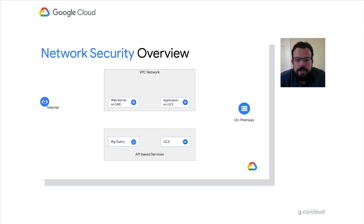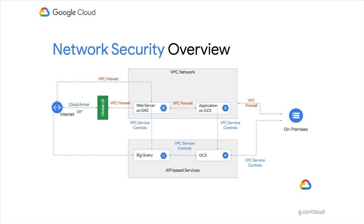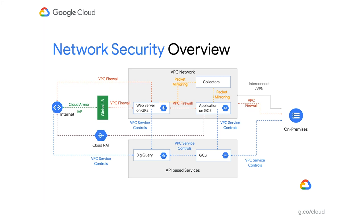On Google Cloud, we have several key network security controls. Starting from the outside in, we have Cloud Armor, the identity-aware proxy, and the global load balancers as our layer 7 controls at the edge of the network. Cloud Armor, in conjunction with the global LBs, protects applications from DDoS attacks. The identity-aware proxy is part of our BeyondCorp line of products to allow access to internal applications without needing a VPN.